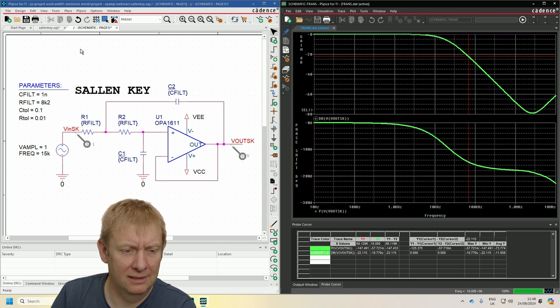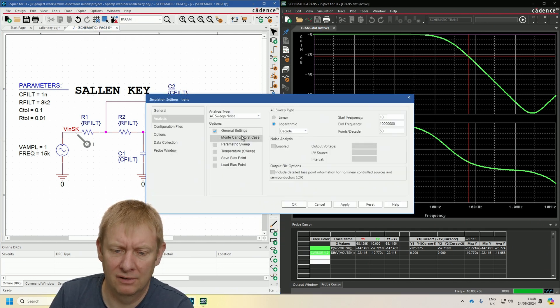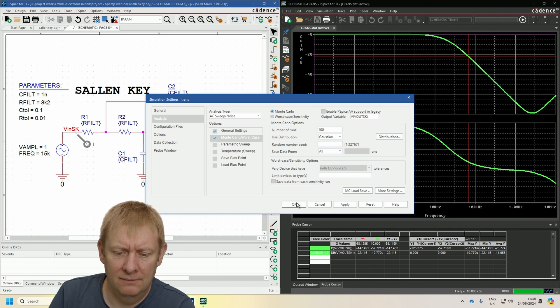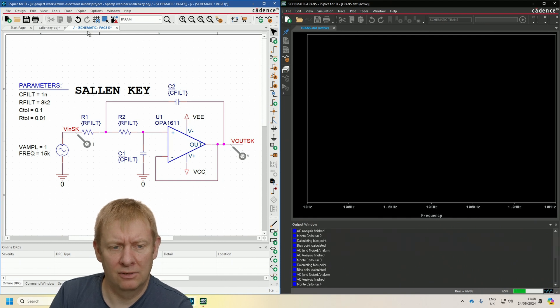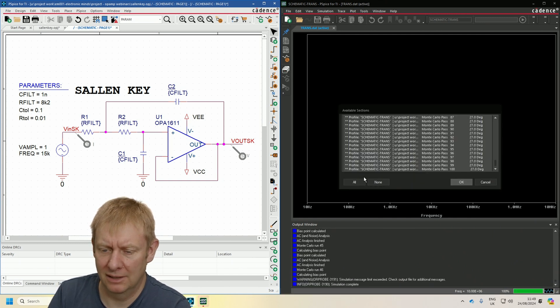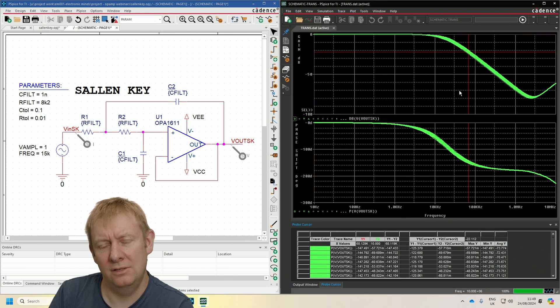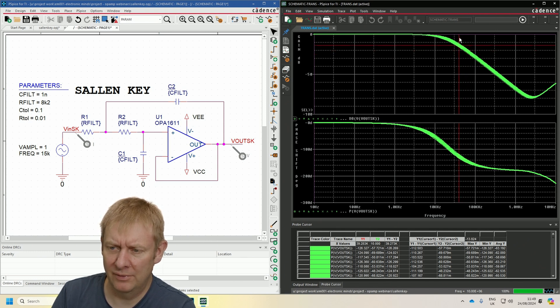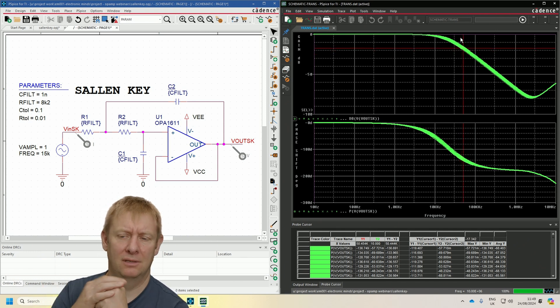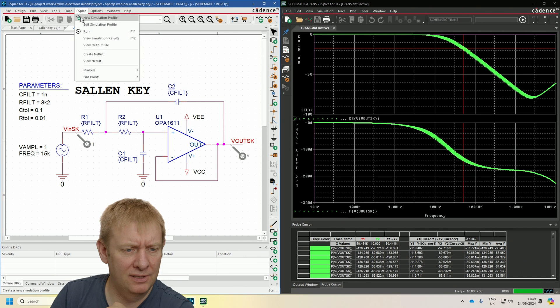Let's edit the simulation profile and turn on Monte Carlo. We've specified that the capacitances for C1 and C2 have a tolerance of 10%, which is typical for ceramic caps, and the resistors are about 1%. This takes a little bit longer because it's running about 100 simulations. Now we get a spread of characteristics. If we zoom in, you can see for each plot we've got very slightly different gain and phase shifts due to the tolerance of the resistor and capacitor values.